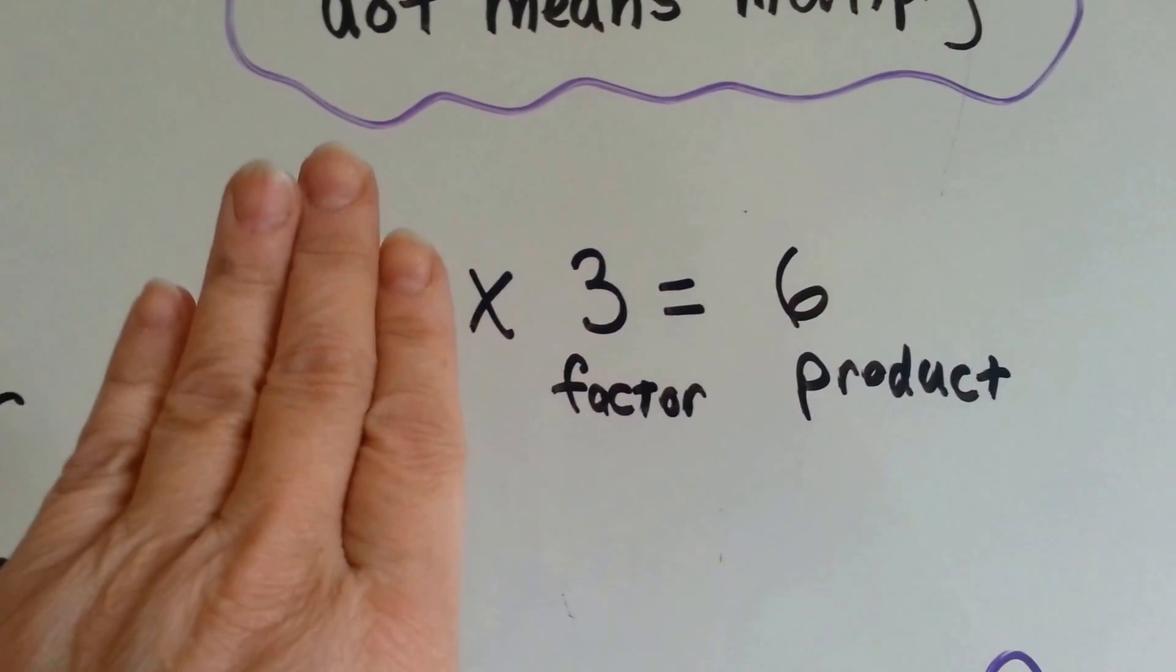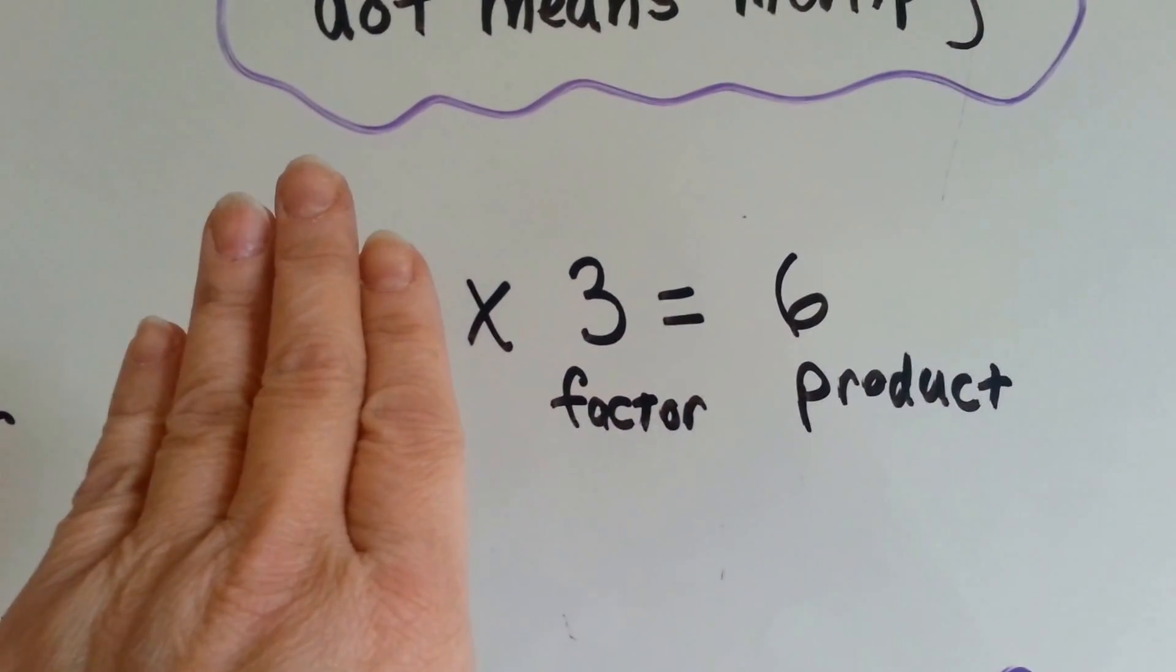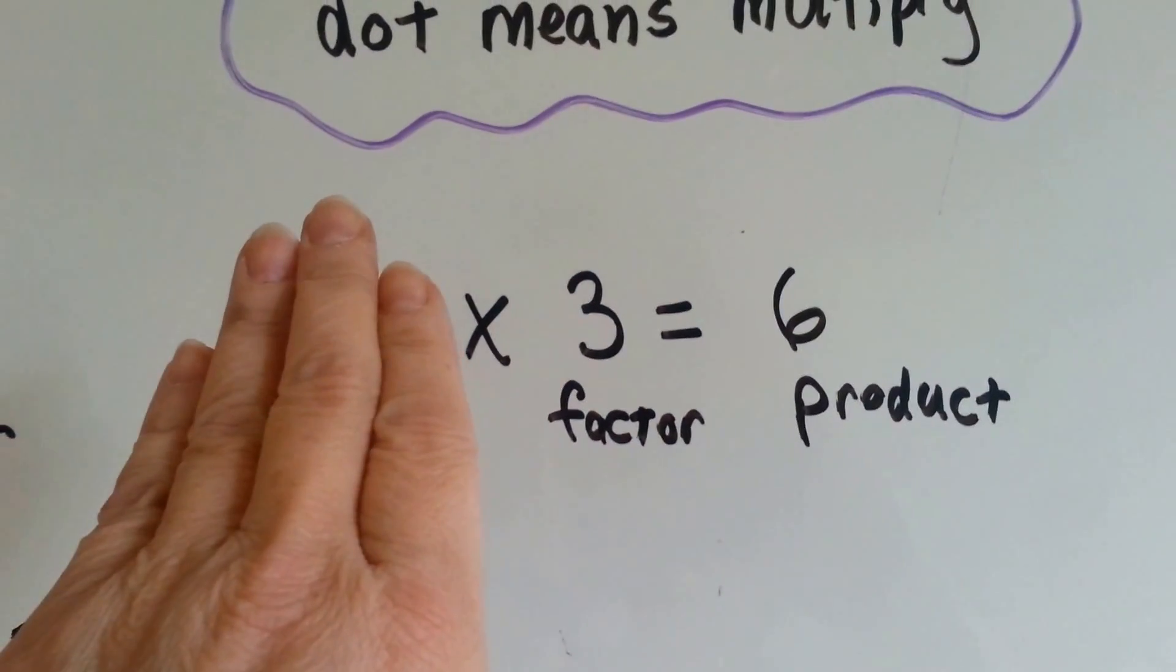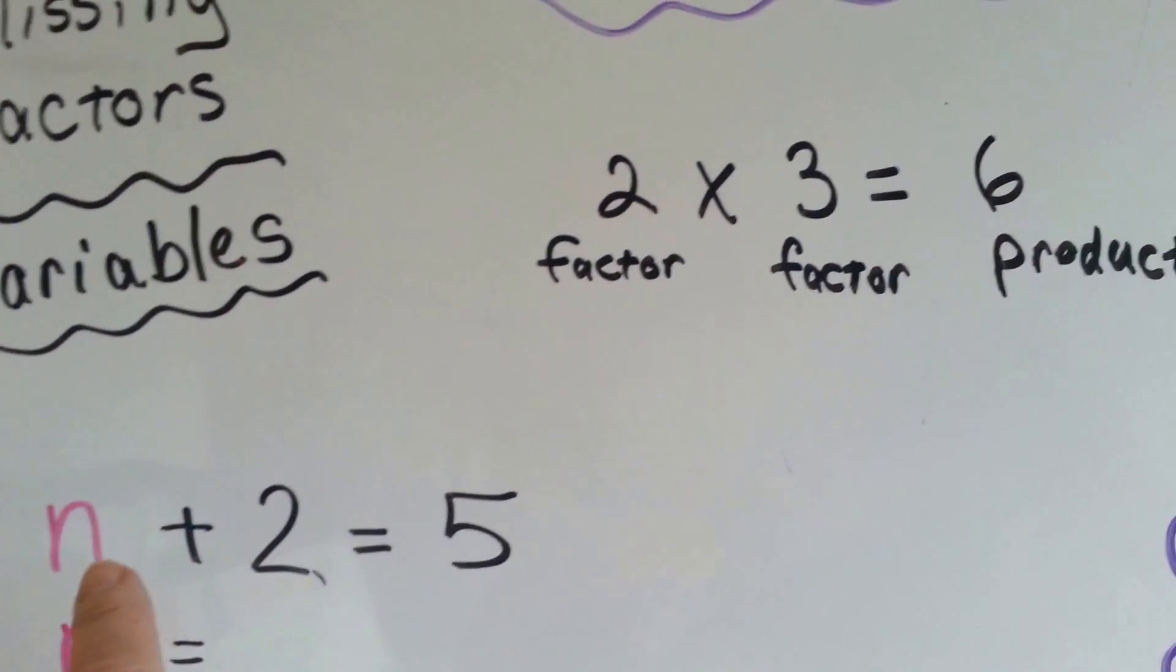So if a factor is missing, you would say something times 3 equals 6. Well, instead of having a blank space there, we put a variable there, an alphabet letter.